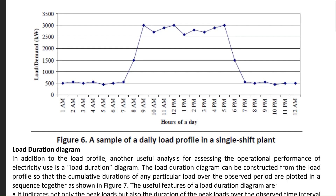From 8:30 to 5:30, the load is by and large operating from 3000 kilowatts down to about 2500 or 2600 kilowatts. As an energy auditing student, you should be able to interpret what is happening there. There is a dip in demand at around 12:30 PM, which you can interpret as the time when lunch hours occur.